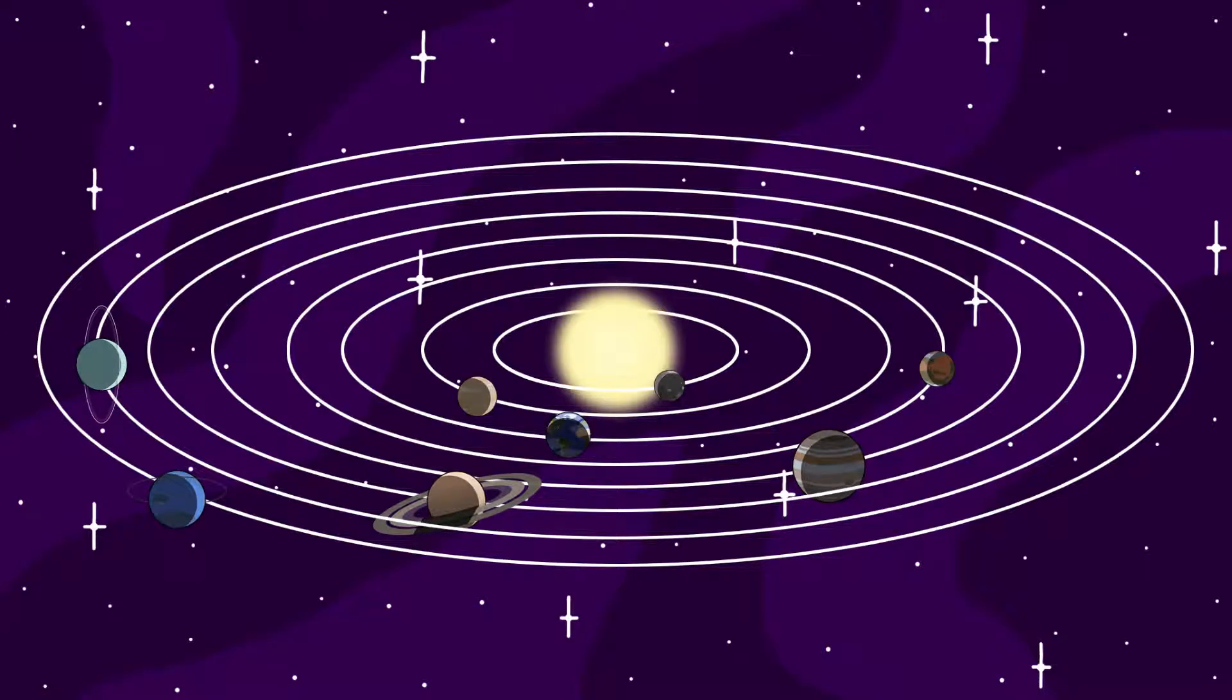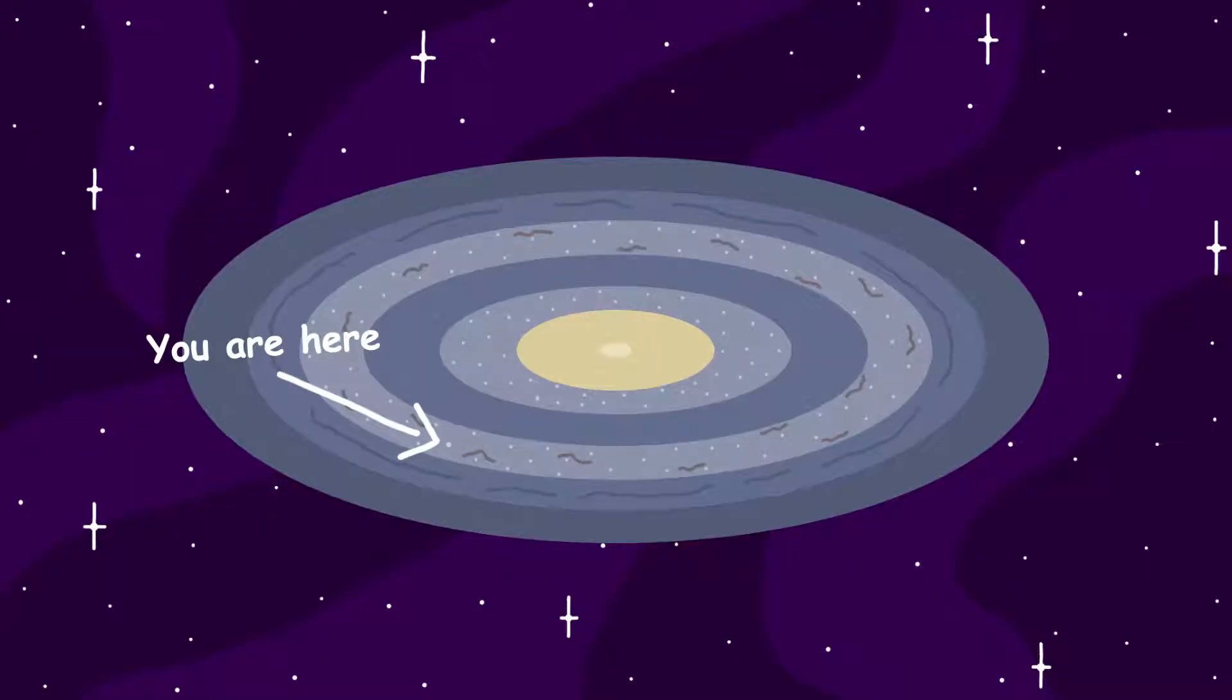The solar system is our planetary system located in an outer spiral arm of the Milky Way galaxy.